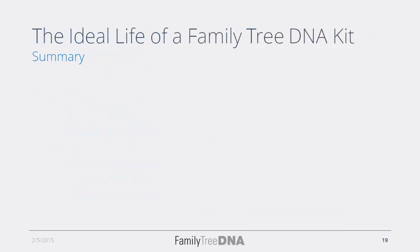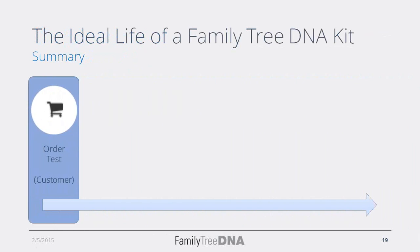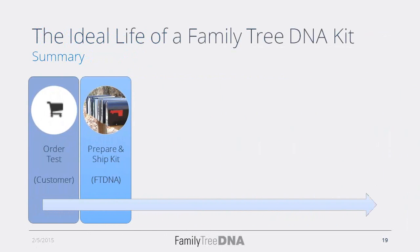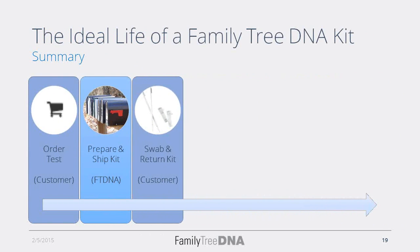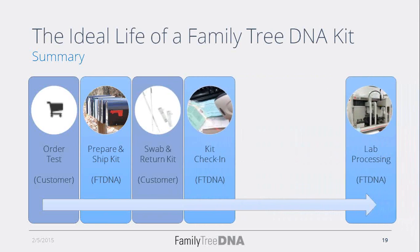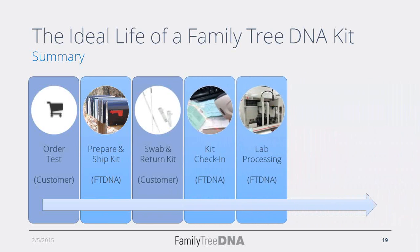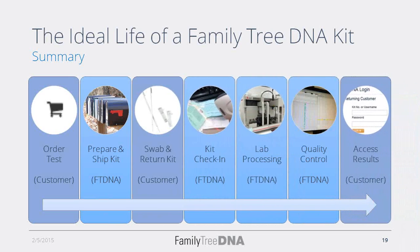To summarize the general process: first, the customer orders their test. Next, Family Tree DNA prepares and ships the physical DNA collection kit. The customer receives the kit, completes the swabs following the instructions, and mails the kit back to Family Tree DNA in Houston. Once we receive the kit back, we check it into the system and send an automated email confirmation. We then go through the various lab processing steps to get results, followed by quality control. Finally, you get to access your results in your MyFTDNA account.